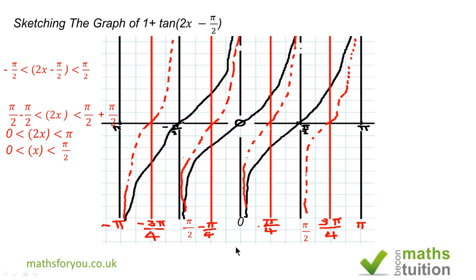And for my red graph, for the graph in question, we've got our asymptotes at π, π/2, 0, -π/2, and then -π.